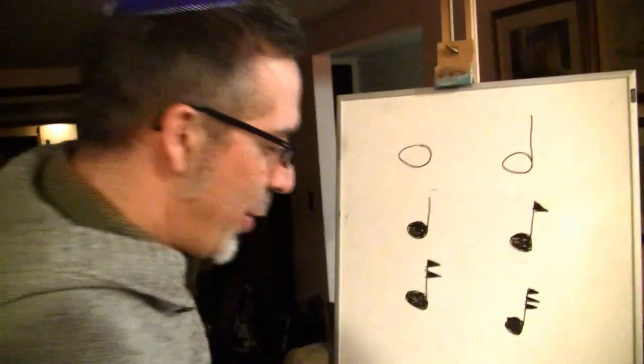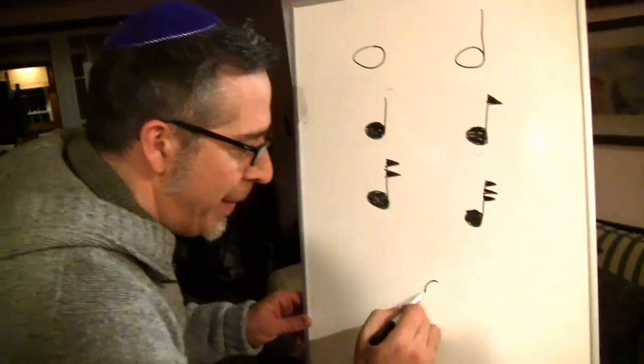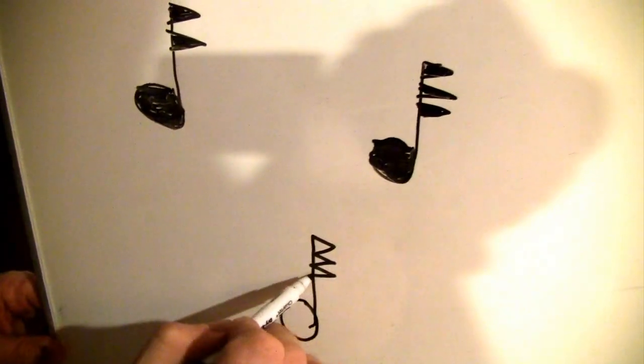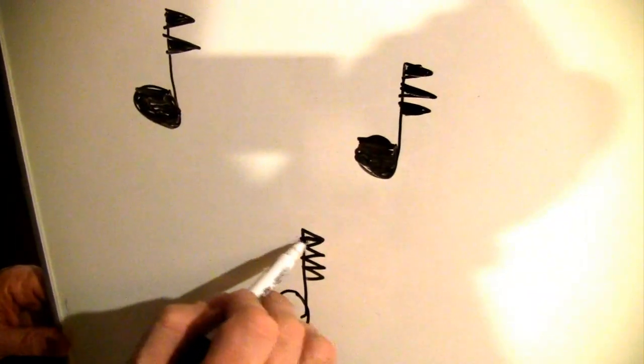And finally, because I don't think you can play any faster than this, we're going to go with a sixty-fourth note. A circle, a stem, and one, two, three, four flags.